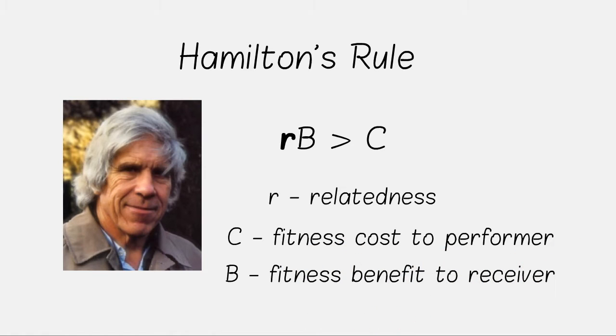R is the relatedness between the performer and the receiver, C is the fitness cost to the performer, and B is the fitness benefit to the receiver. It essentially shows that helping behaviour can evolve when the indirect fitness benefits of aiding kin compensate the performer for any losses in personal reproduction incurred by altruistic behaviour.